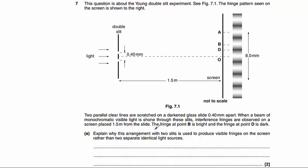Part A asks us to explain why this arrangement with two slits is used to produce visible fringes rather than just two separate identical light sources. Well, in order to get interference we need coherent sources, that is sources that have a constant phase difference.